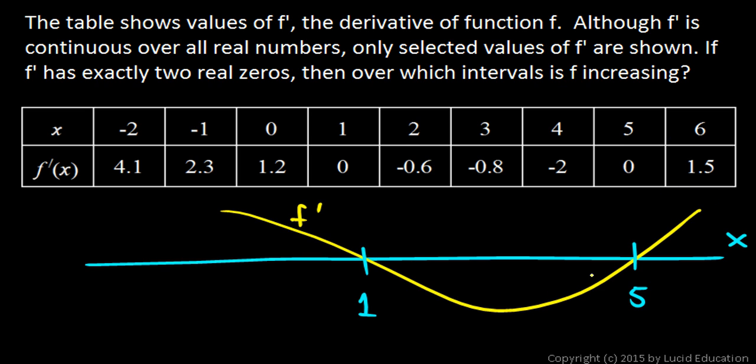And I know there are no other places where this graph crosses the axis, except for here and here. And I know that because I'm told there are only two real zeros, and there they are. So it can't go back up between 1 and 5, or before 1 or after 5. The graph has to be negative in this entire region, and positive over here, and positive over there.